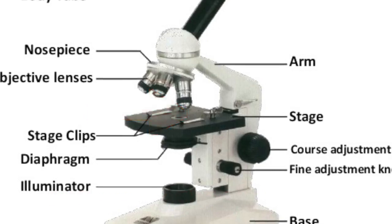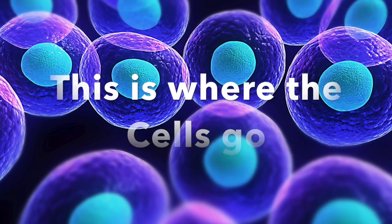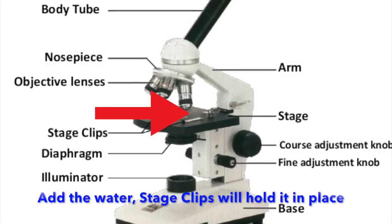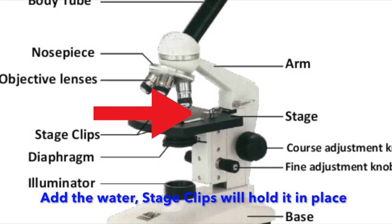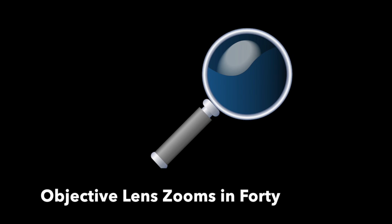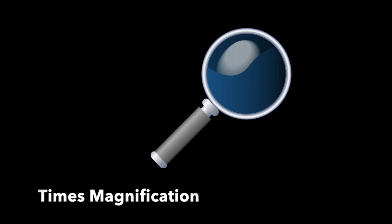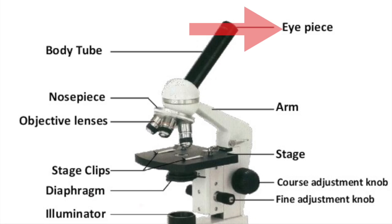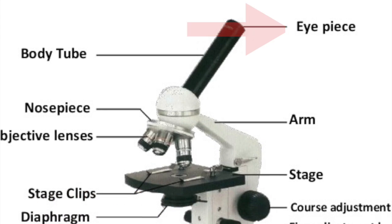First prepare the glass slide, this is where the cells go. Add the water stage, clips will hold it in place. Objective lens zooms in 40 times magnification. Look in the eyepiece, use fine and coarse knobs.